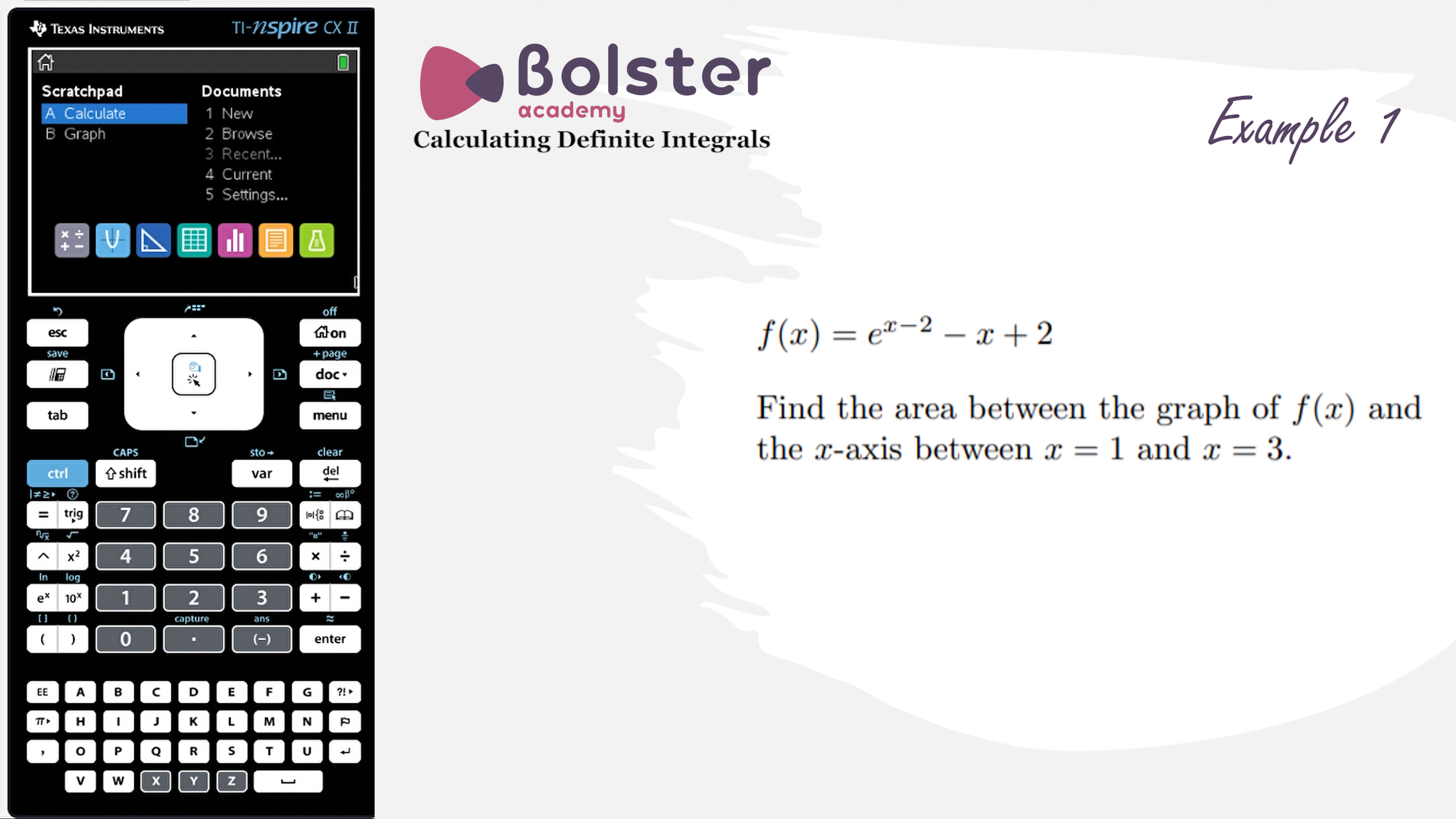In this video, we're going to look at how to find the areas under curves using our calculator. Our first example question says f of x is equal to e to the x minus 2 minus x plus 2. We've been asked to find the area between the graph of f of x and the x-axis between x equals 1 and x equals 3.